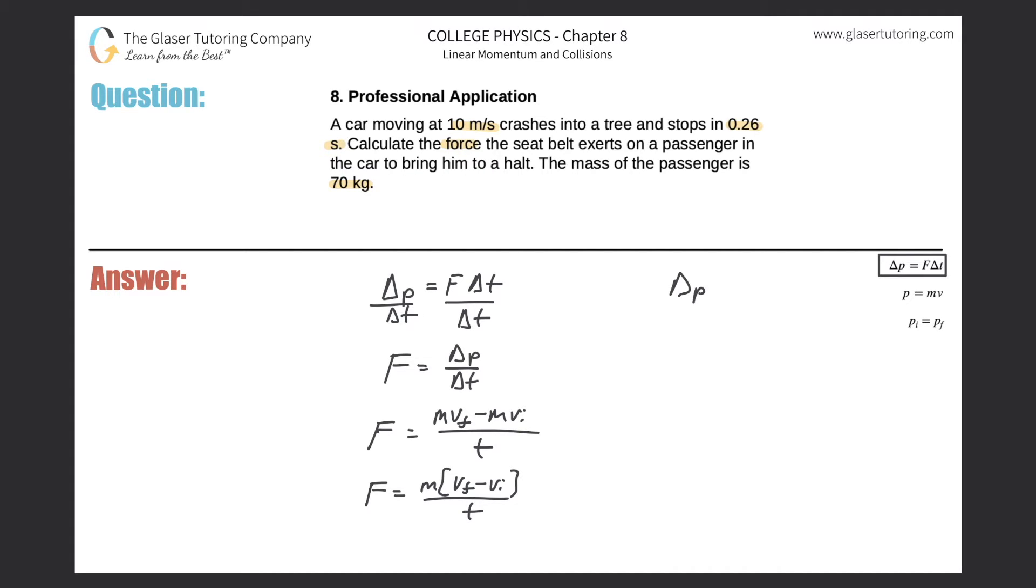You should be noticing now, anytime I'm talking about change in momentum, I can simply rewrite that as the mass multiplied by the final velocity minus the initial velocity. I'm probably going to just start doing this shortcut instead of deriving it the whole time in future videos.